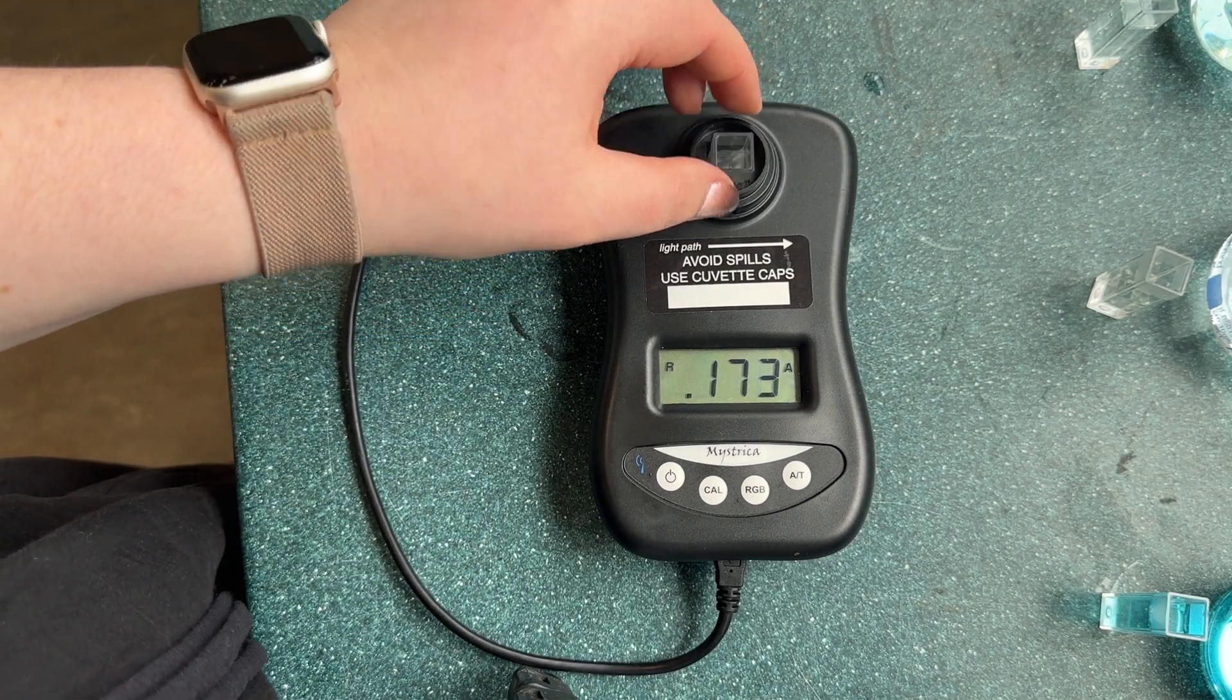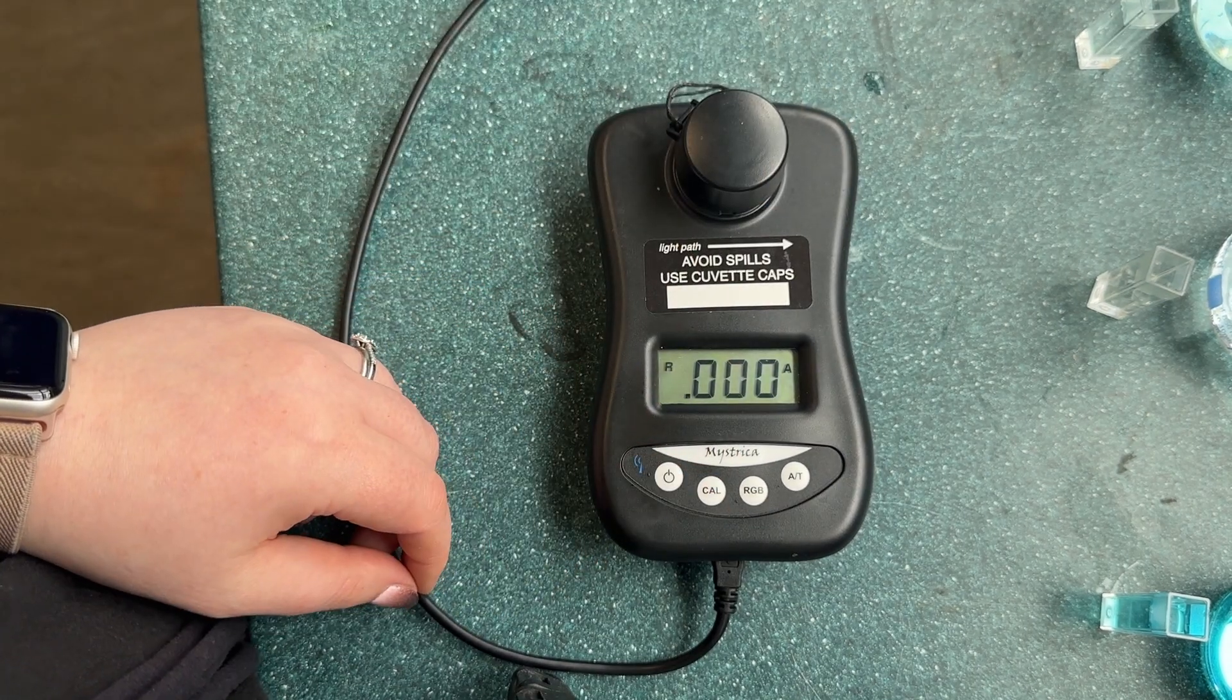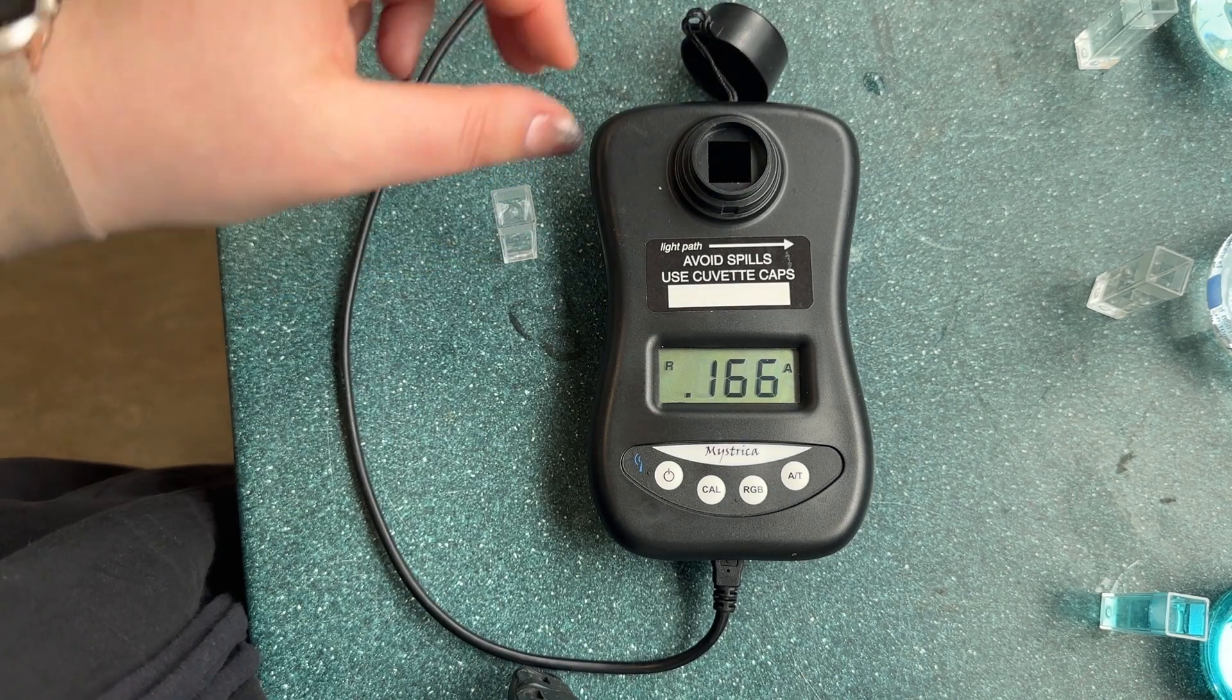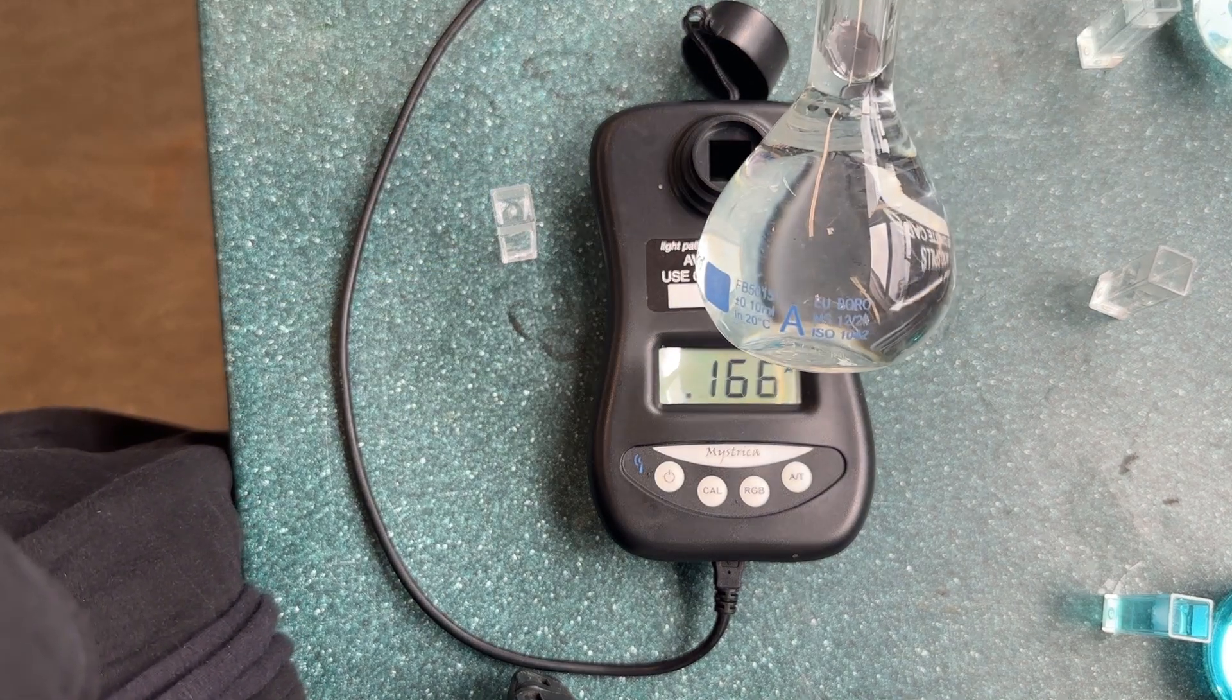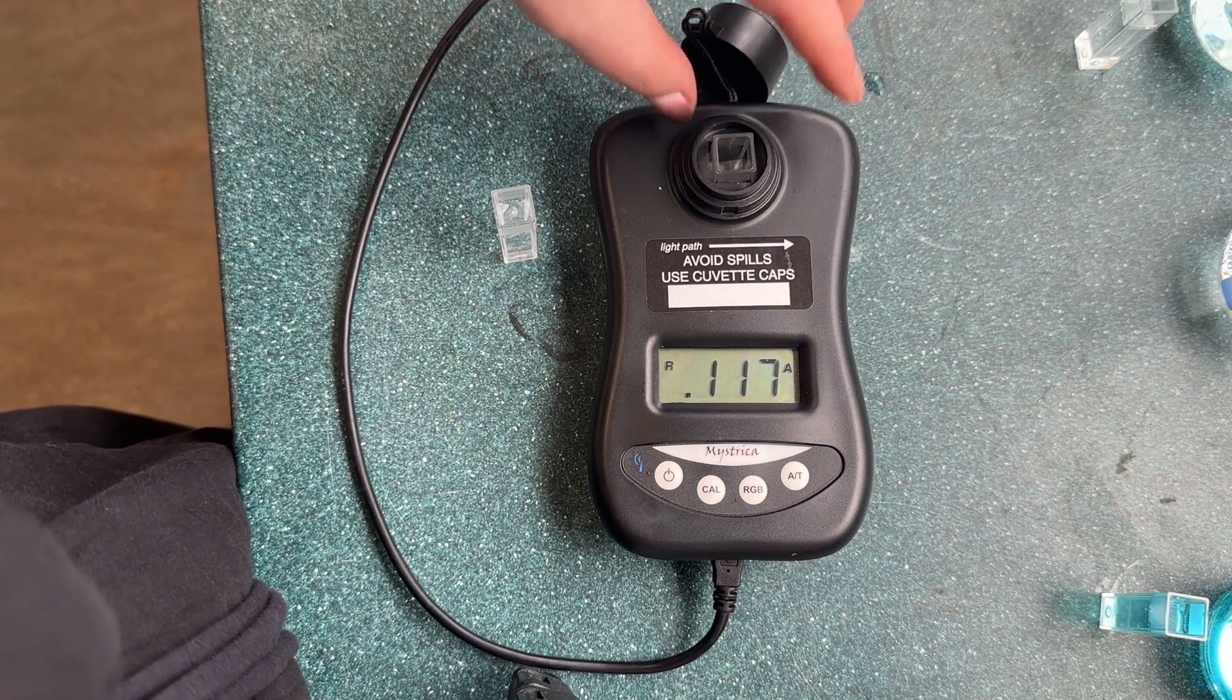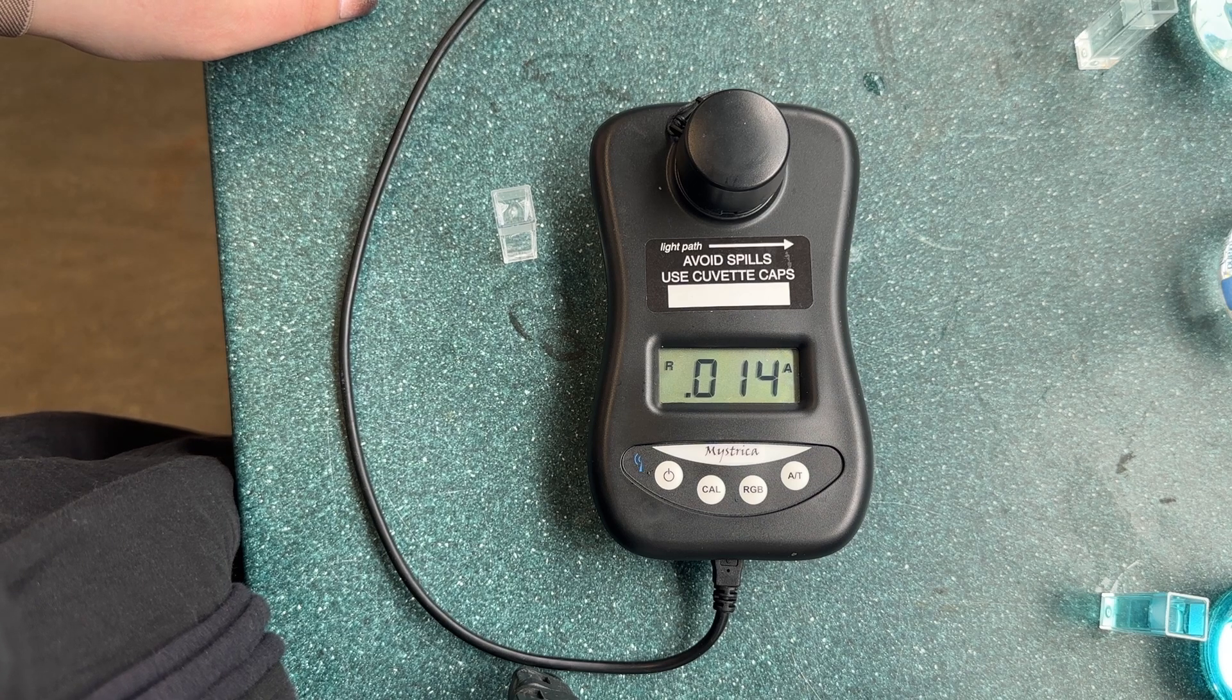We first need to calibrate the colorimeter using the solvent that was used. In this case it was water. Here we've calibrated the colorimeter and we're going to start with our least concentrated solution. This was the solution with the concentration of 0.008 moles per liter. We put the solution into the colorimeter and take the reading.